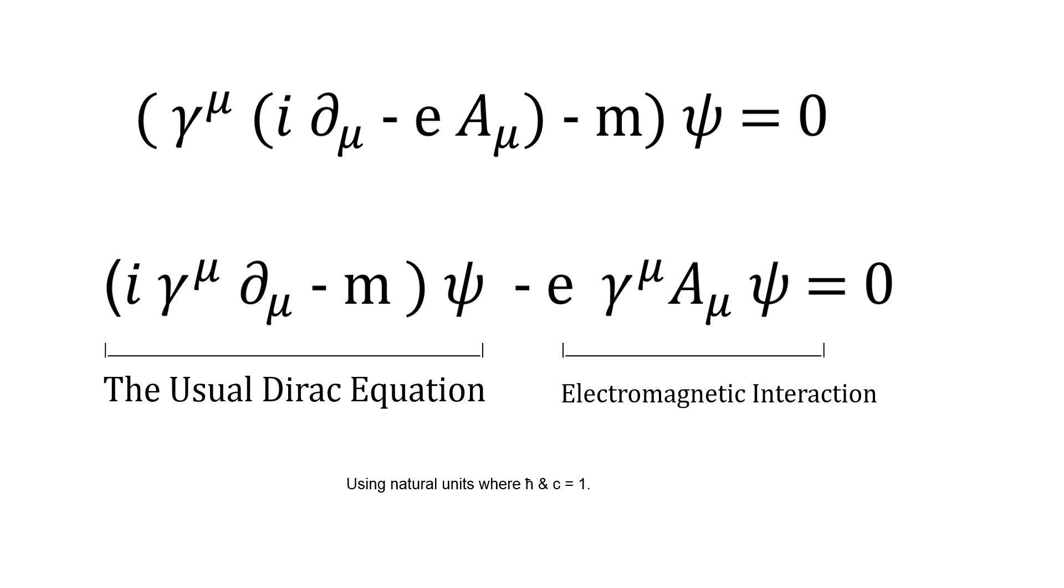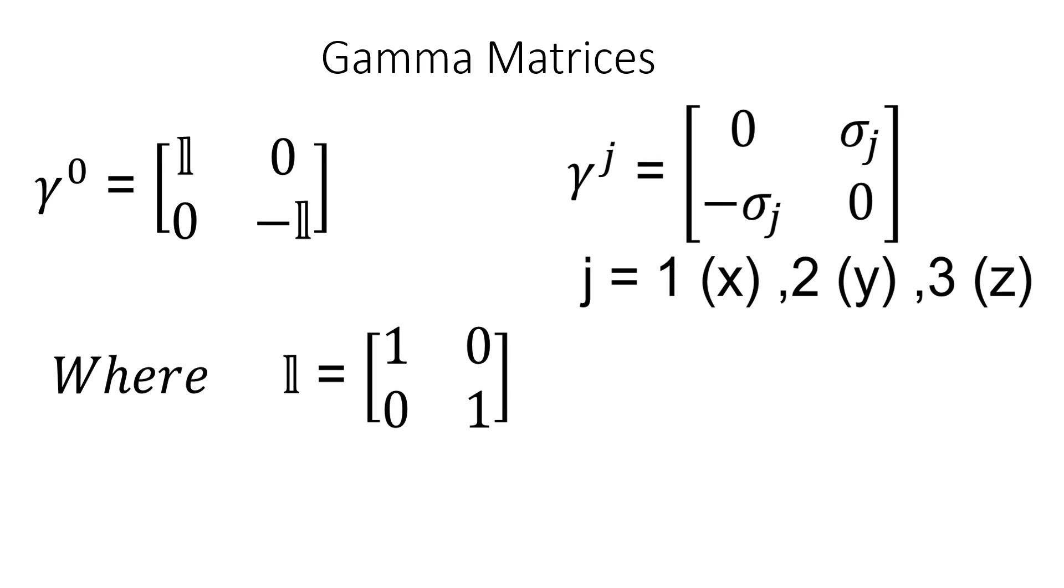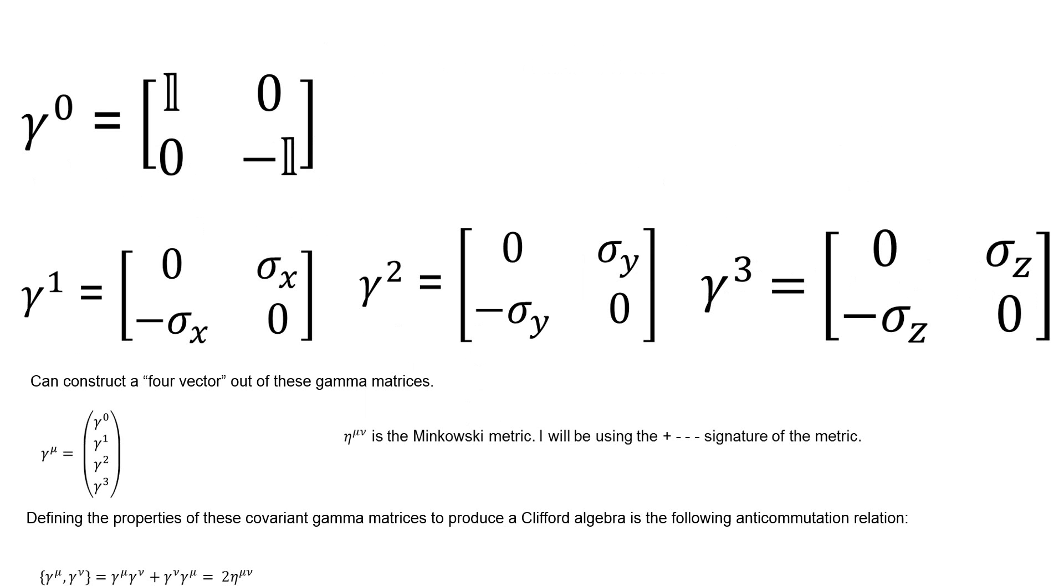I'm using natural units where h bar and c equal 1. So what are these gamma matrices? Well, these gamma matrices are partly the identity matrices. They're 4x4 matrices, probably the identity matrices and the Pauli matrices. Gamma 0 is a 4x4 matrix which has 1, 0, 0, minus 1, where this script 1 is a 2x2 identity matrix, and this gamma j has all the Pauli matrices which contain the space x, y, and z.